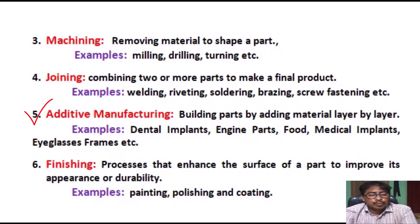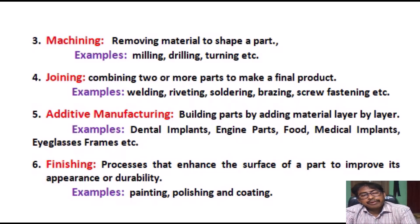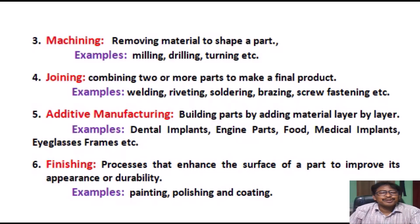Five: Additive Manufacturing — building parts by adding material layer by layer. It is also called 3D printing. It is a process used to fabricate a physical object from a three-dimensional (3D) digital model, typically by laying down and bonding a large number of successive thin layers of materials. Examples: dental implants, engine parts, food, medical implants, eyeglasses frames, etc.